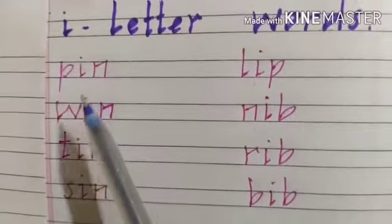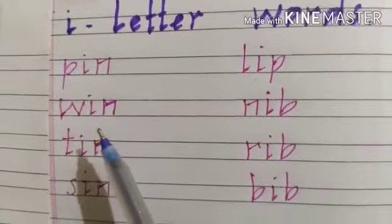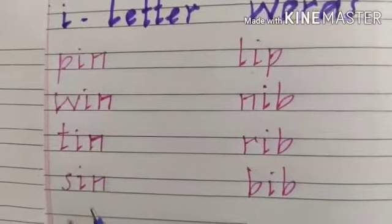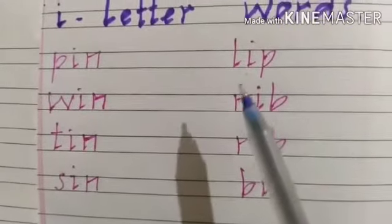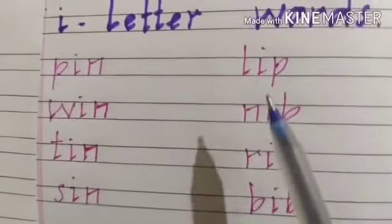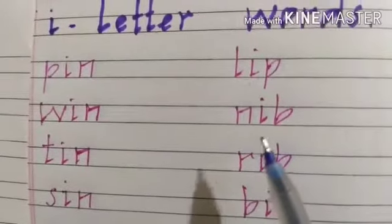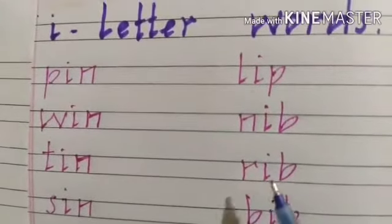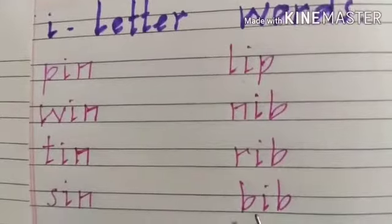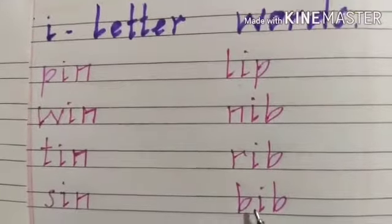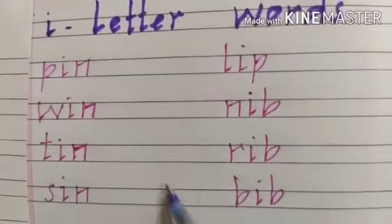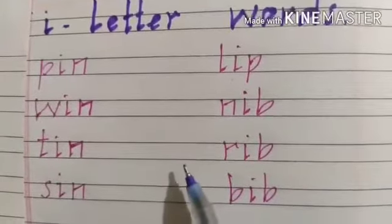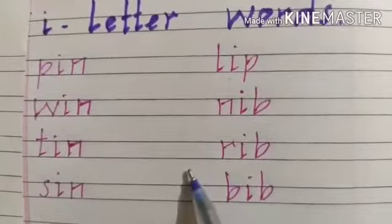Pin, win, tin, sin, lip, nib, rib, pep. Children, the I sound is coming from these words.